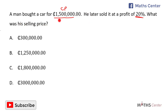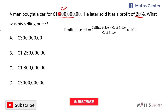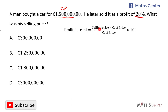We are going to use this information to find the selling price. The profit percent formula is: profit percent equals selling price minus cost price, divided by cost price, times 100. We have the profit percent as 20 and the cost price as 1.5 million, so we can substitute to find the selling price.